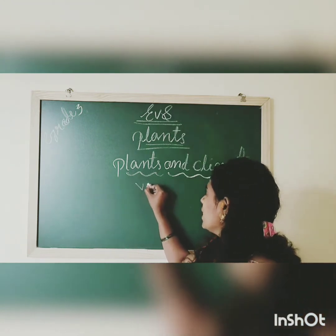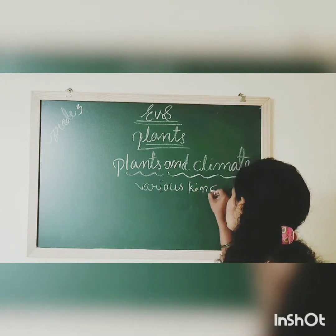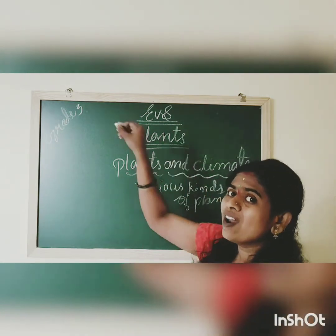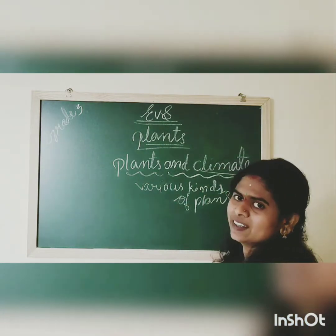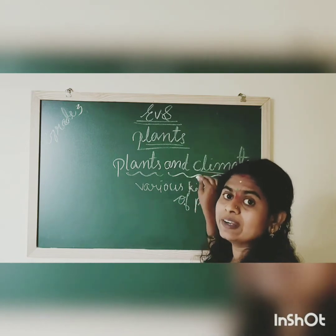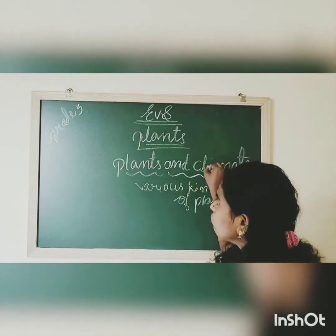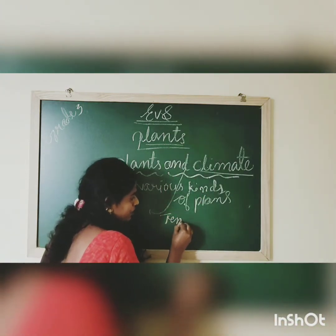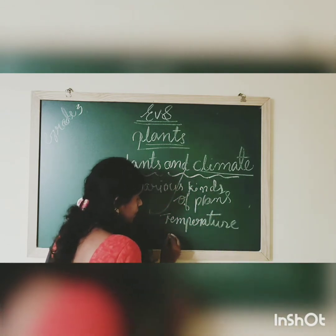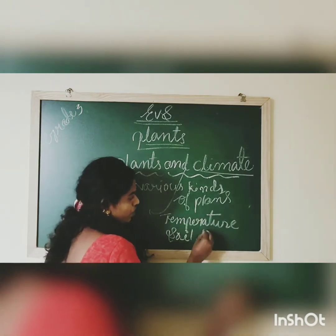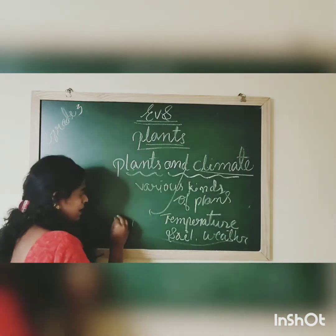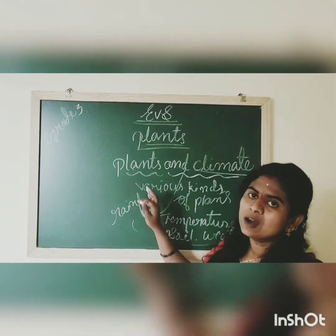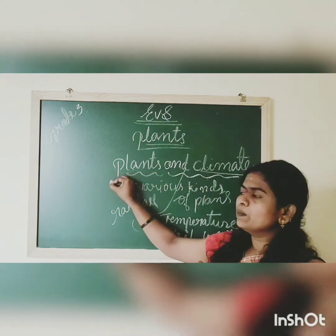All the plants cannot grow in all kinds of regions. Climate — also called weather — includes rainfall, temperature, and soil. These factors influence the growing of plants. Climate is very important for growing the plants, as stated in your textbook. Plants need sunlight, air, and water to grow.